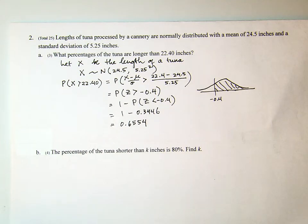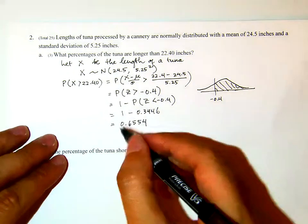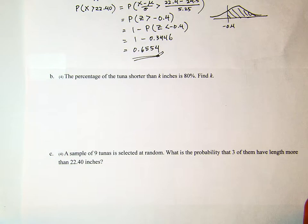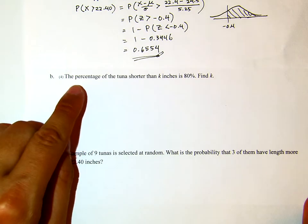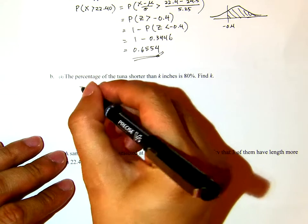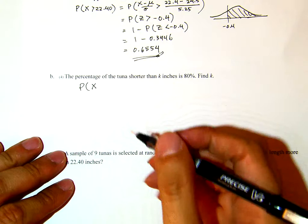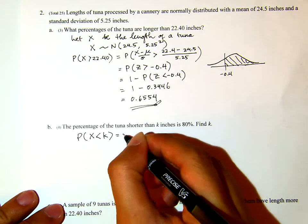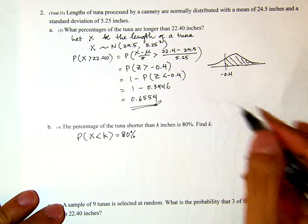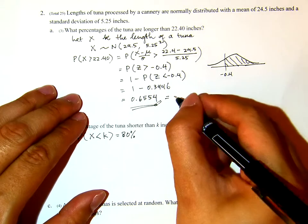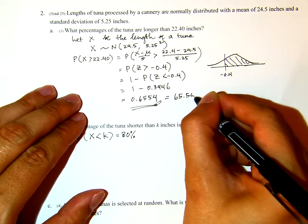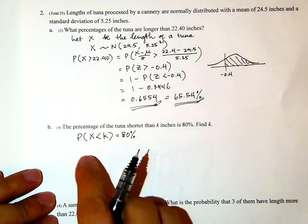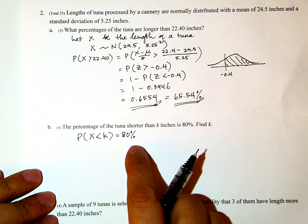So the probability that the length of a tuna is longer than 22.4 inches is 0.6554, or 65.54%. Now part b: the percentage of tuna shorter than k inches is 80 percent — find k. We use the same random variable x, and we want the proportion shorter than k inches to be 80 percent.